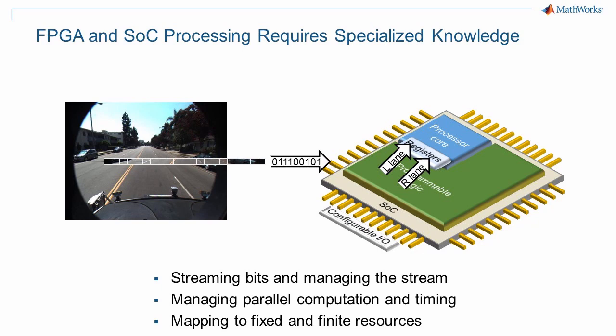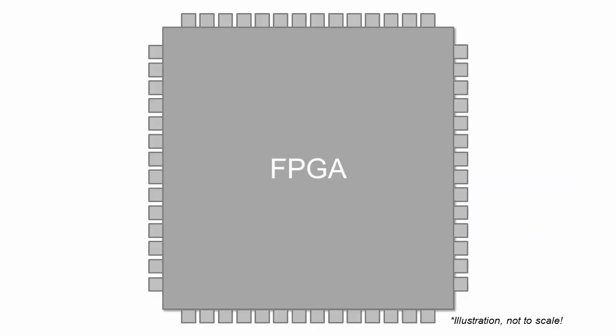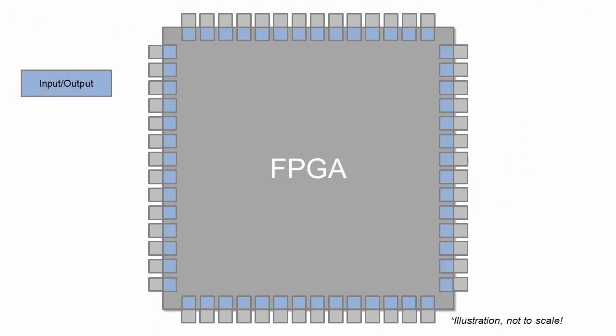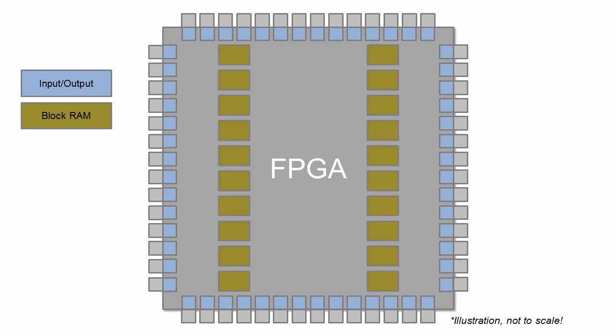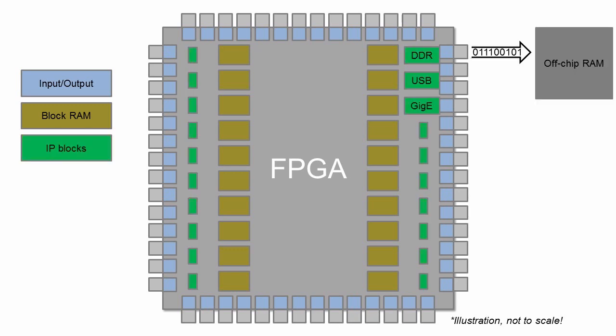Processing in hardware requires adapting algorithms to process streams of pixel data and logic to manage those data streams. Processing can be parallelized, which accelerates computation, but also requires coordinating the timing of parallel paths. One of the biggest constraints with hardware is that it is fixed with a finite set of resources. Data streams in and out via a fixed set of pins, and there is a certain amount of on-chip RAM — called block RAM — in an FPGA, but it's not enough to store entire image frames. Storing a full frame typically requires sending it to off-chip RAM via memory control or IP blocks.